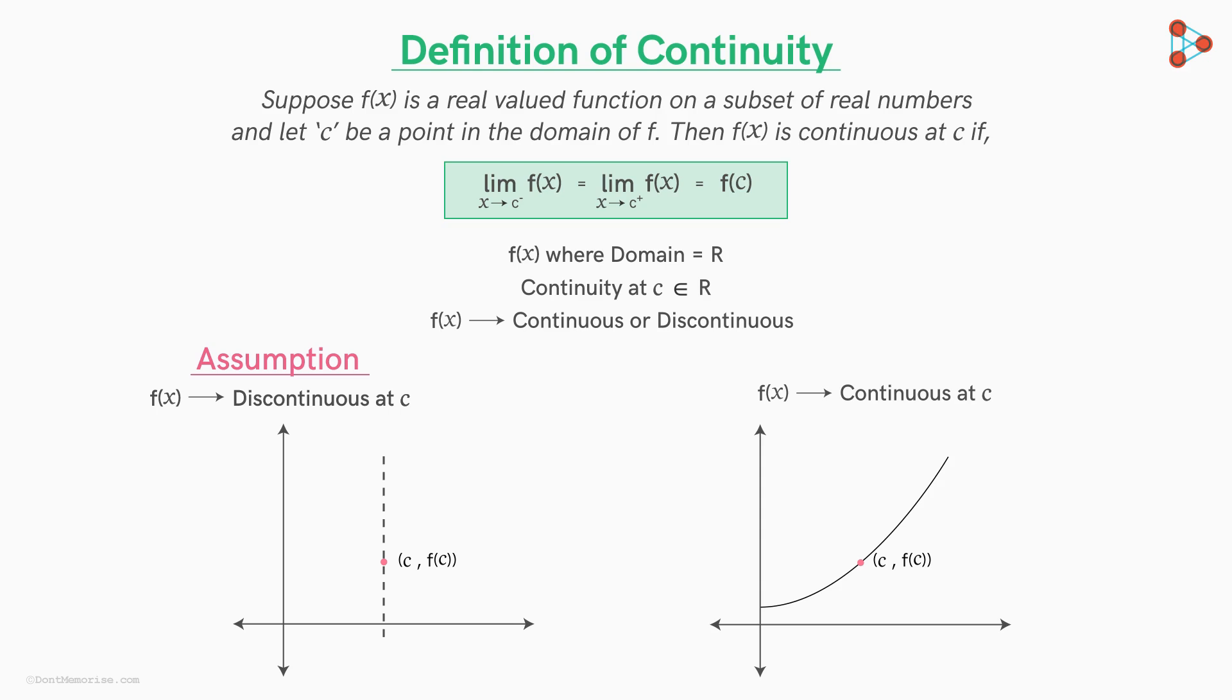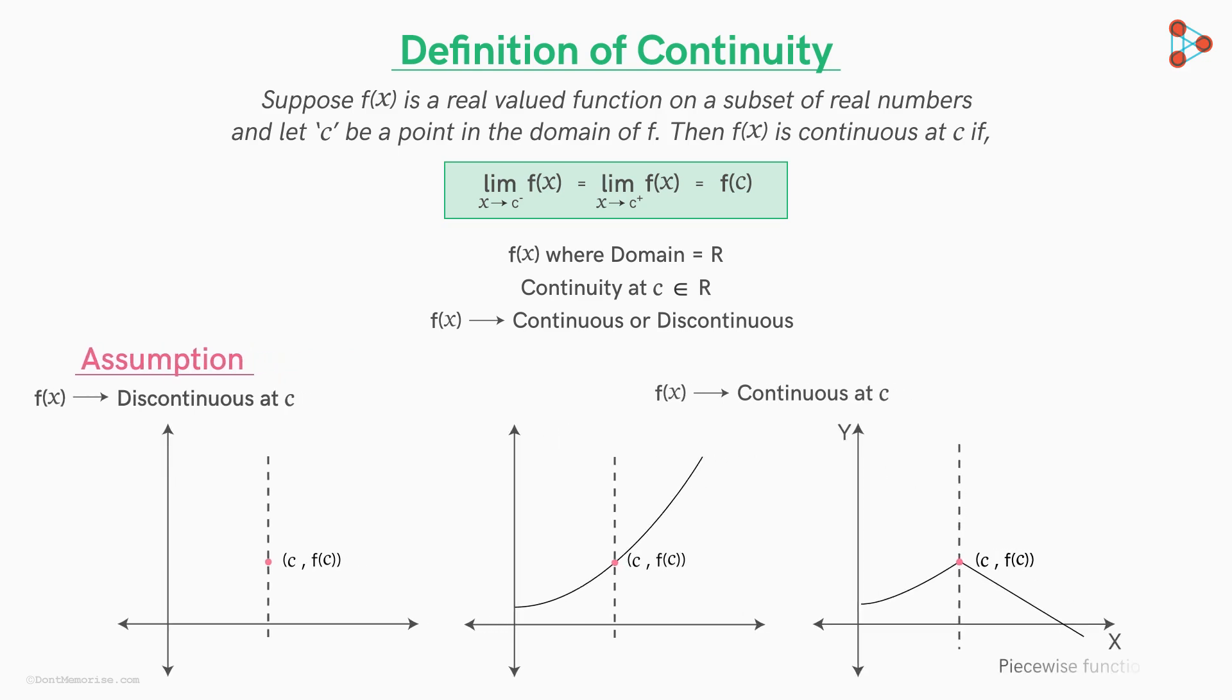Again, it does not matter what the graphs are on either side or where the function is defined at c on this vertical line. It can either be a piecewise function defined differently on either sides of c, or it can be given by a single nice and smooth relation in that particular neighbourhood. Either way, we are guaranteed that as long as the graphs on either sides are connected to c comma f of c, function is continuous at c.